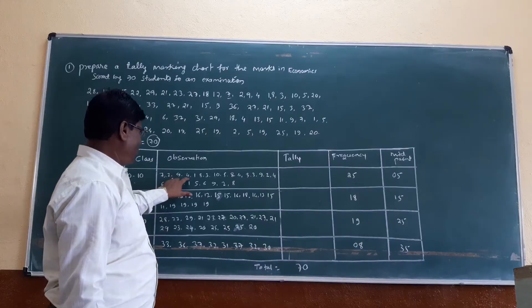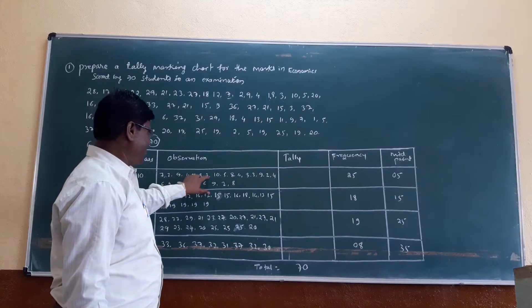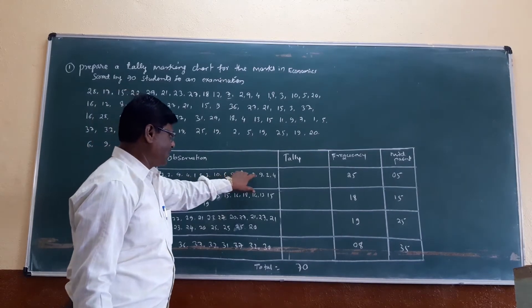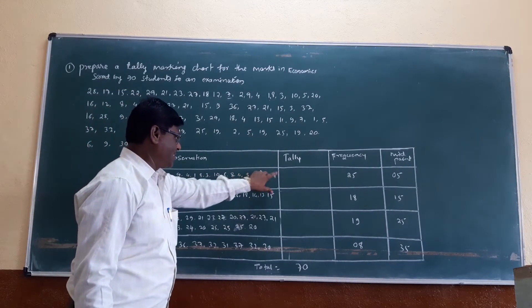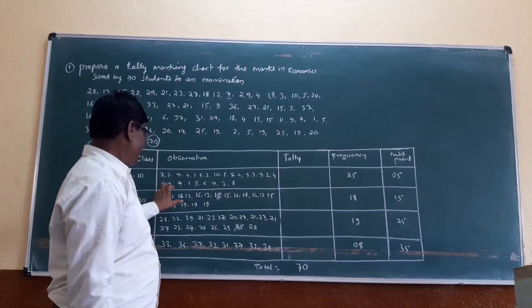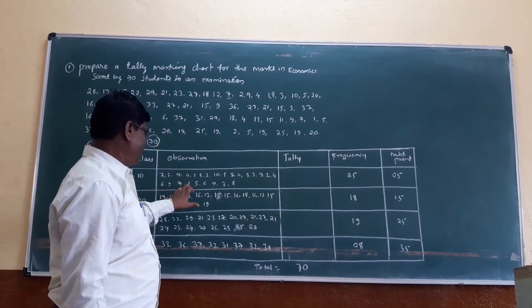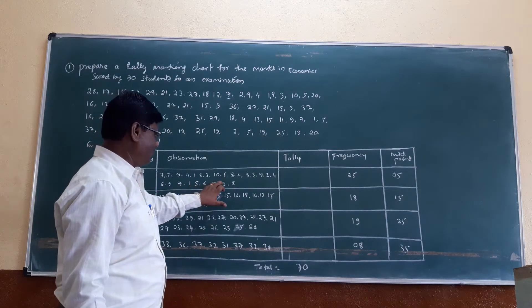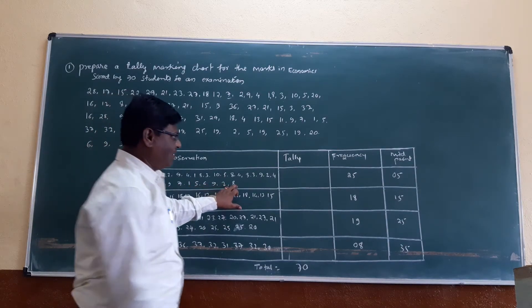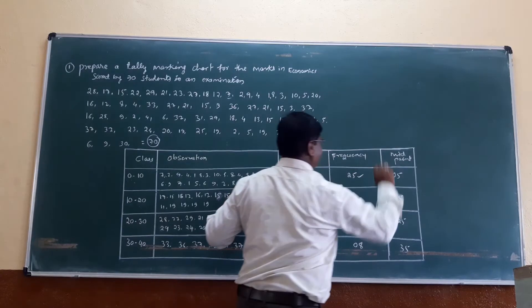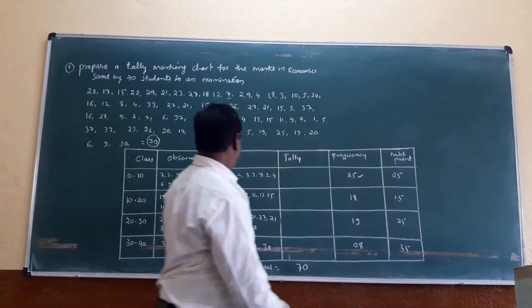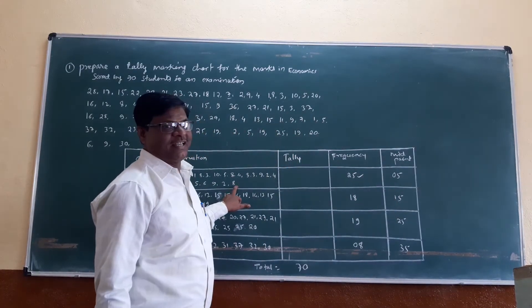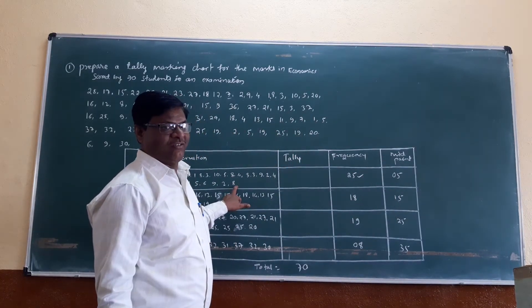Counting 1 through 25: 1, 2, 3, 4, 5, 6, 7, 8, 9, 10, 11, 12, 13, 14, 15, 16, 17, 18, 19, 20, 21, 22, 23, 24, 25. The observation is 25 and the frequency is 25.